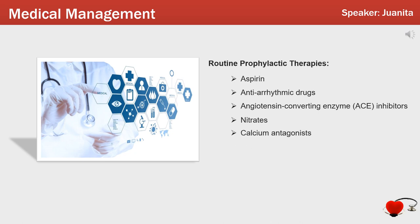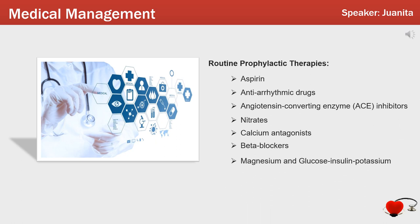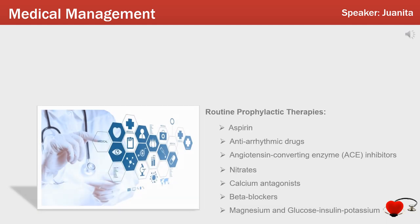There is no case for using calcium antagonists for prophylactic purposes in the acute phase of myocardial infarction. Beta blockers have been used in the acute phase of MI because of their potential to limit infarct size, reduce the incidence of fatal arrhythmias, and relieve pain. The benefits of magnesium and glucose-insulin-potassium are questionable among experts, so they are not recommended.